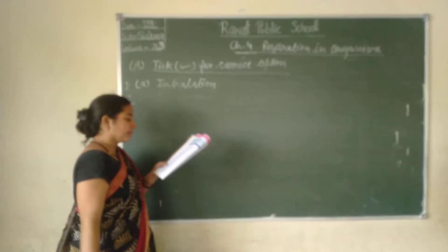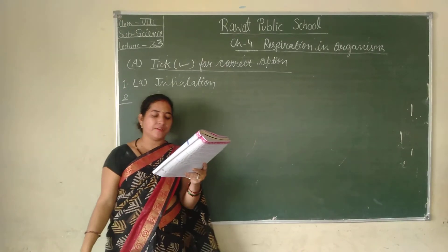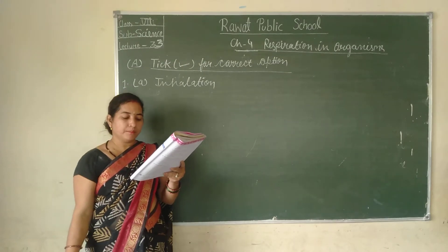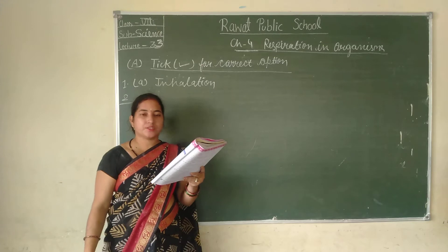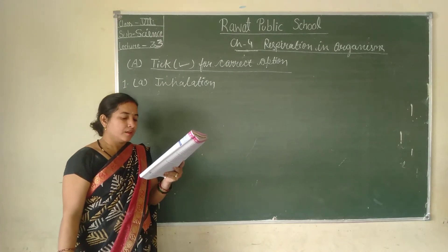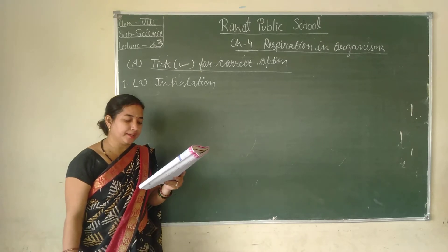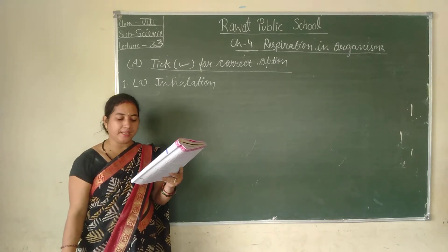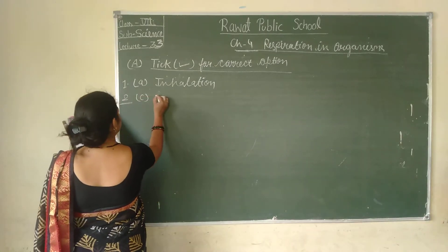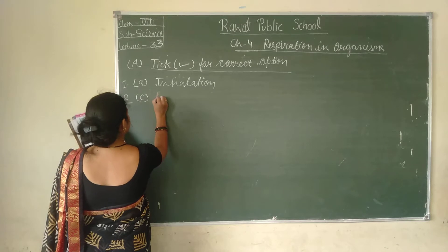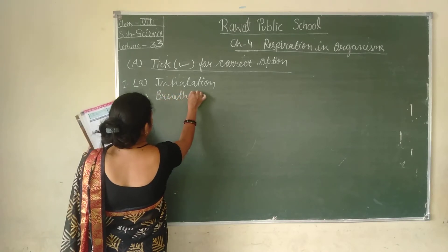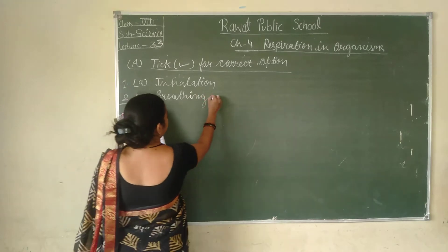The second question is: the number of times we breathe in one minute is called the breathing rate. The answer is C — breathing rate.